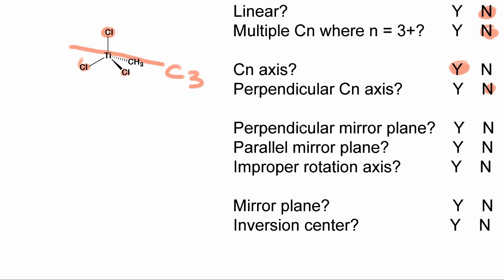The next question is do we have a perpendicular mirror plane? Looking at this molecule, we don't have a perpendicular mirror plane because it's tetrahedral, so that is a no. Do we have a parallel mirror plane — one that is parallel to the primary axis? That is yes. We can see that we have one mirror plane incorporating this chloride, the titanium, and the methyl group; another incorporating a second chloride, the titanium, and the methyl; and a third incorporating the last chloride, the titanium, and the methyl. So we have three parallel mirror planes.